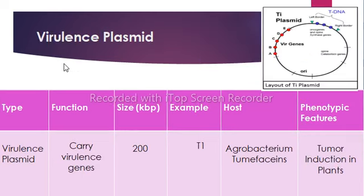Next we have virulence plasmid, which carries virulence genes. Its size is about 200 kilobase pairs and it makes bacteria more virulent by enabling resistance to host defense mechanisms or by producing toxins. For example, the enterotoxigenic strain of E. coli causes traveler's diarrhea because of a plasmid that codes for an enterotoxin.